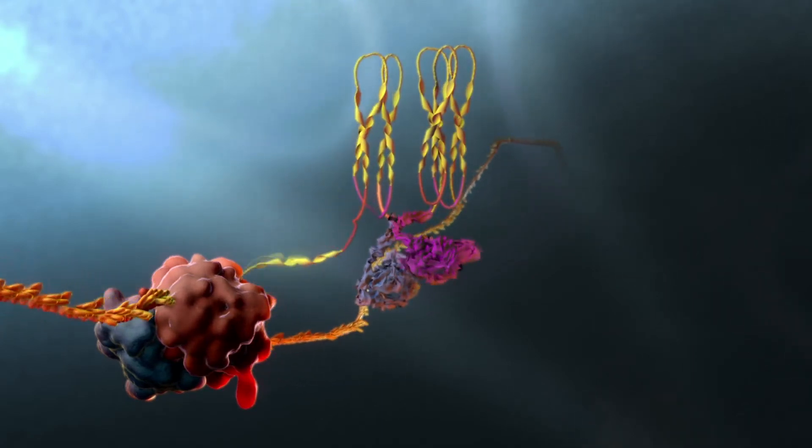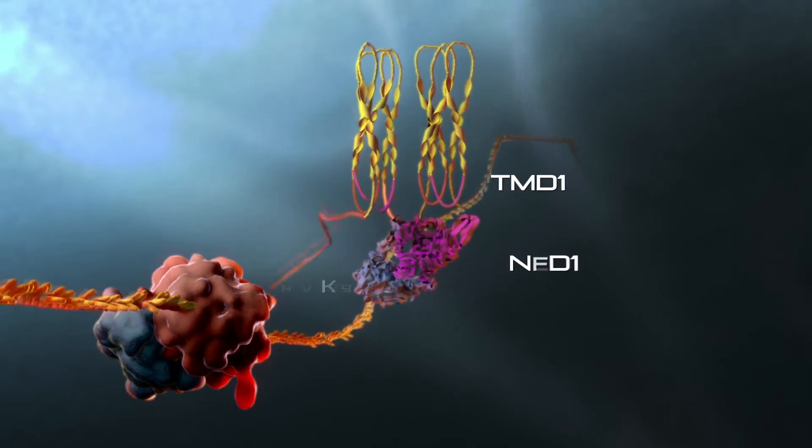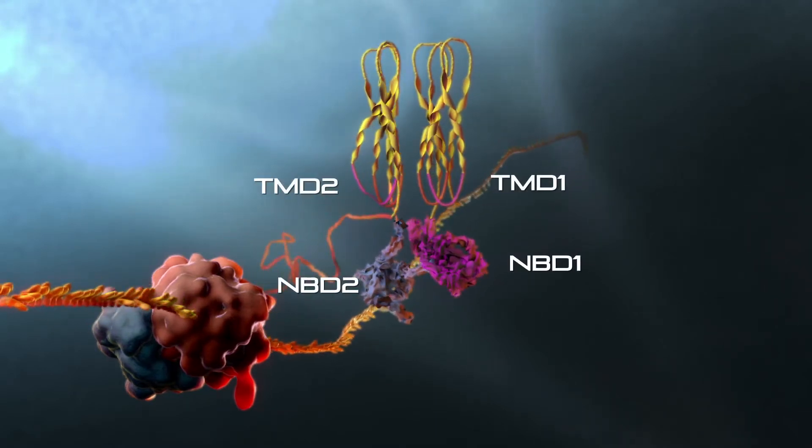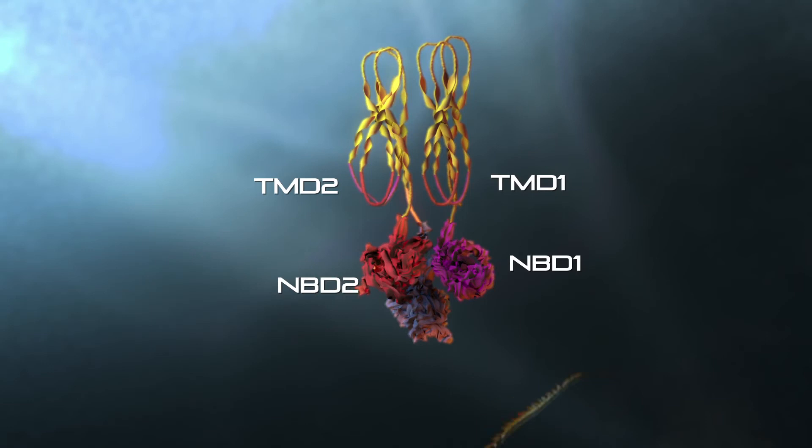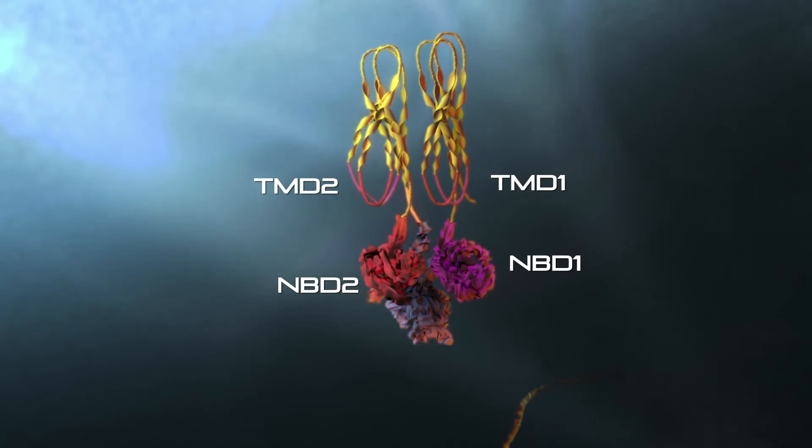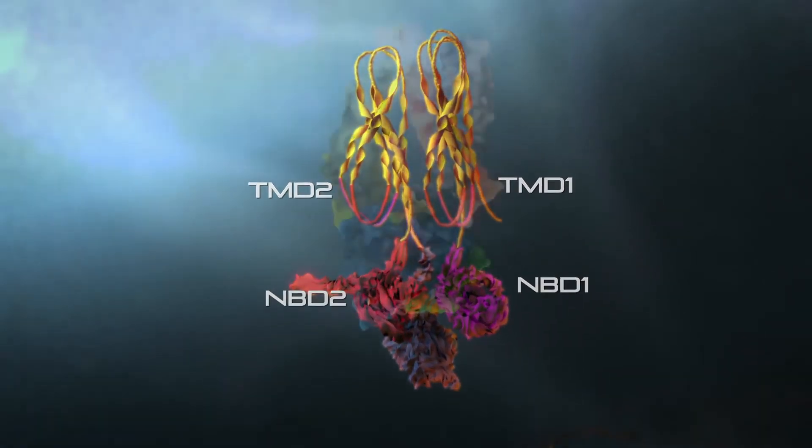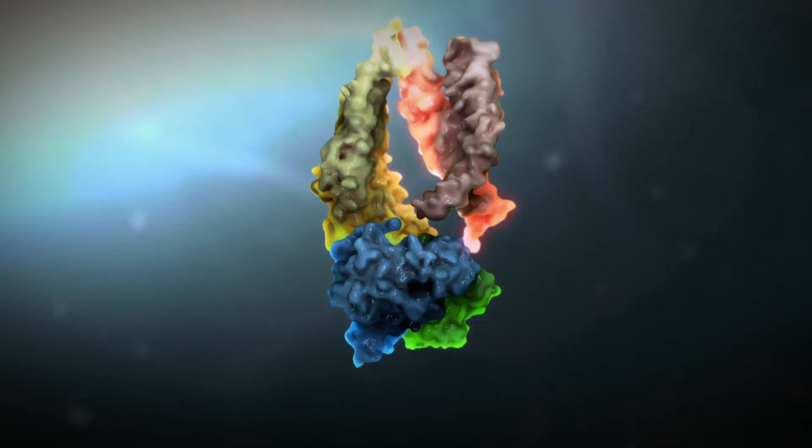The round structure is called a ribosome, which reads the instructions from the RNA and assembles the CFTR protein. The protein is made up of building blocks called amino acids, and these form different structures called domains that fold together like a puzzle.